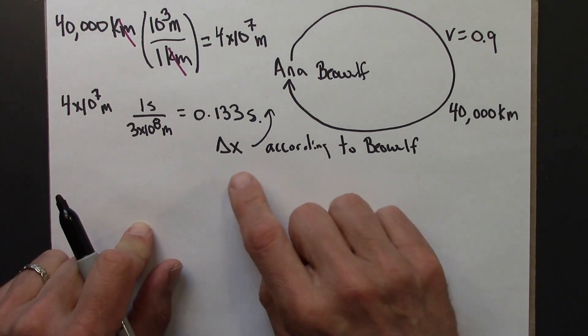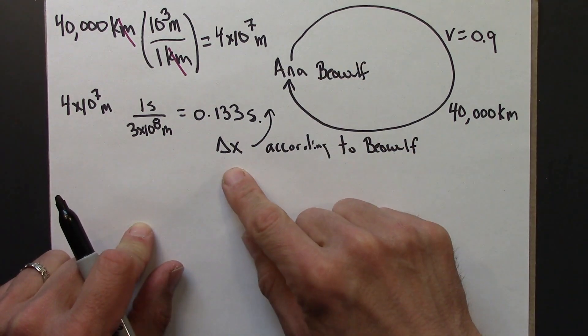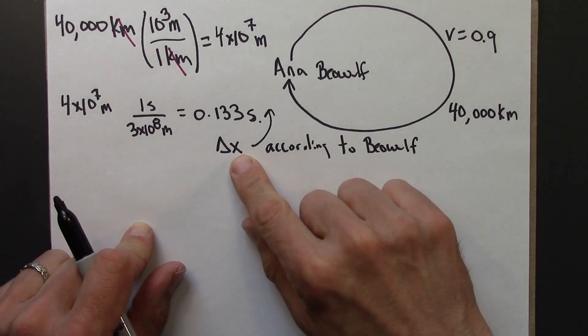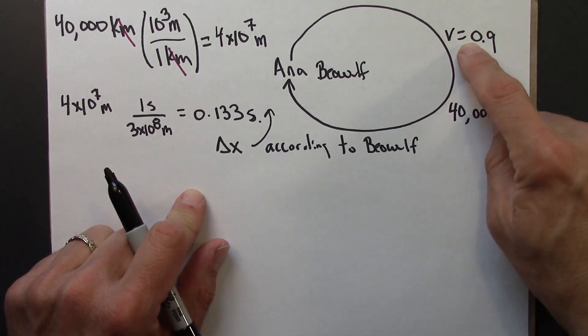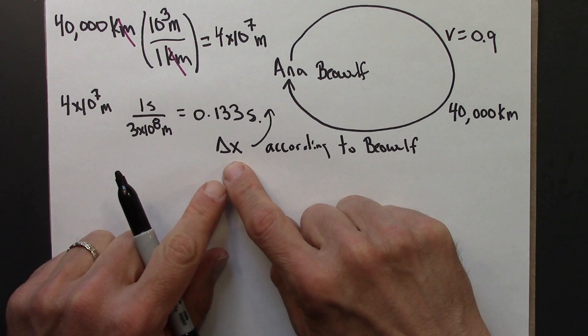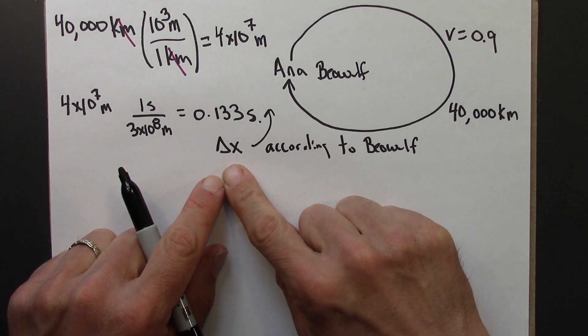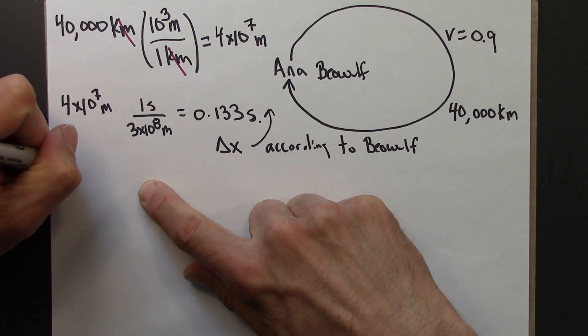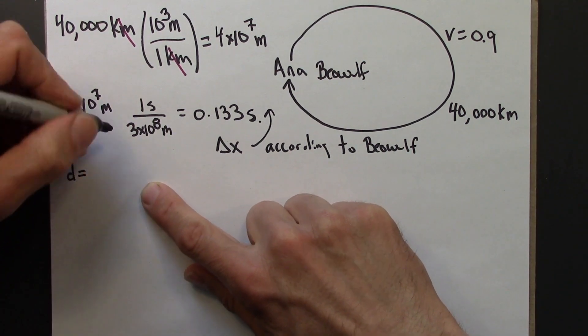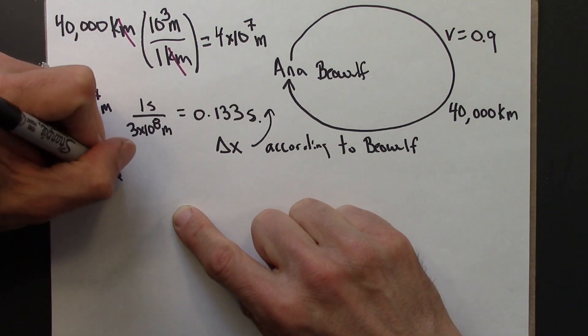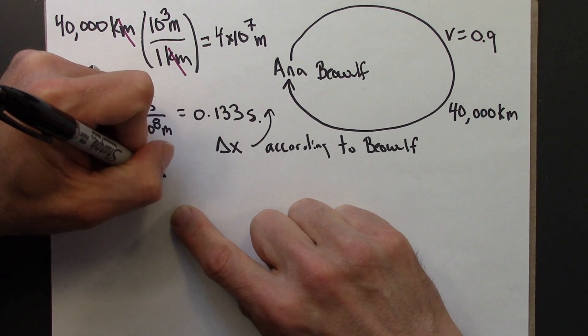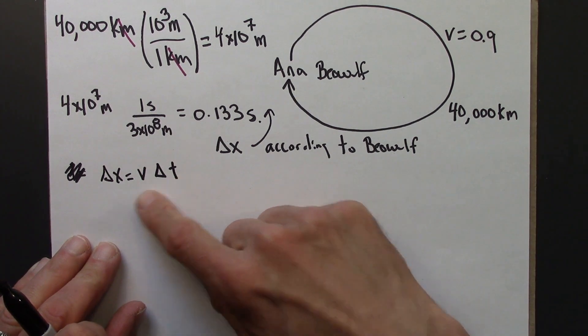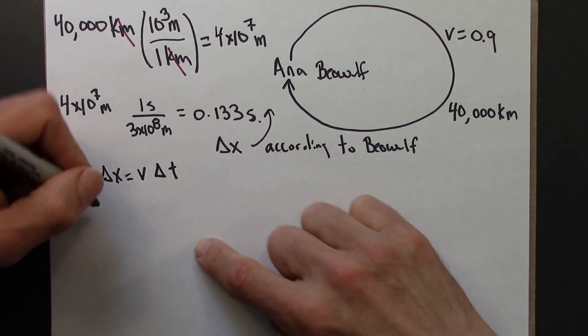Now we want to know, according to Beowulf, how long does it take Ana to make this journey? We can just use distance equals rate times time. Beowulf knows how fast Ana's going and knows how far Ana's going, so he can use that to figure out how long it takes Ana to make that trip. Distance equals speed times time interval, so delta t is delta x over the speed.